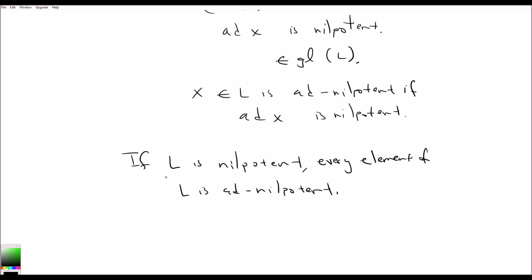The interesting question is: what about the converse? If every element of L is ad-nilpotent, can we say L is nilpotent? Engel's theorem, which we will look at in the next video, says that if all elements of L are ad-nilpotent, then L is nilpotent. That will conclude this video — see you in the next one for Engel's theorem. Thank you for watching.